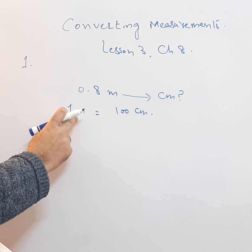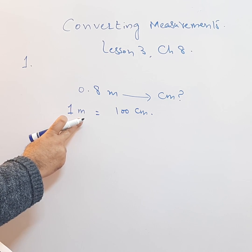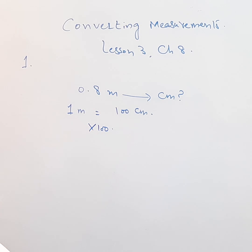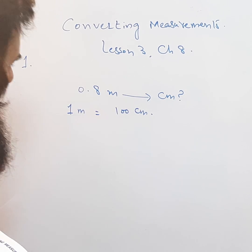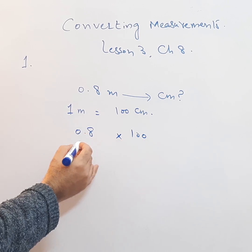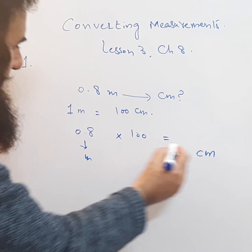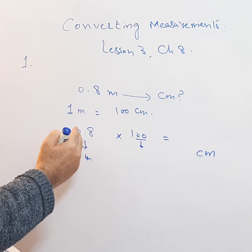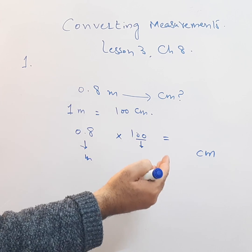So whenever the given quantity is in meters, to convert it into centimeters, we need to multiply with 100 and we will get the answer. So here, simply, we will just multiply 0.8 with 100. This is given in meters and we will get the answer in centimeters. We know that when we multiply with 100, there are two zeros, so we need to shift the decimal to the right side two times.